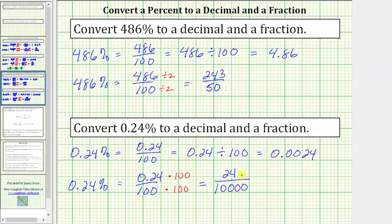The greatest common factor between 24 and 10,000 is eight. And therefore, to simplify, we divide the numerator and denominator by eight. And 24 divided by eight equals three, 10,000 divided by eight equals 1,250. So now we have the percentage written as a simplified fraction. I hope you found this helpful.